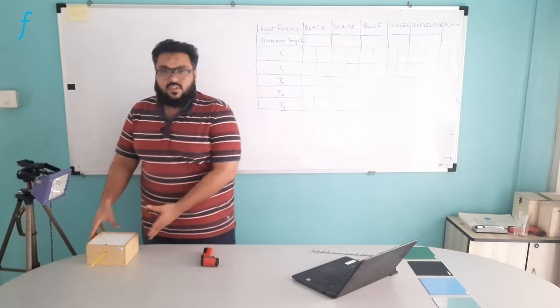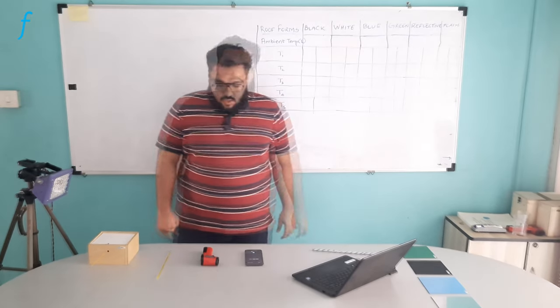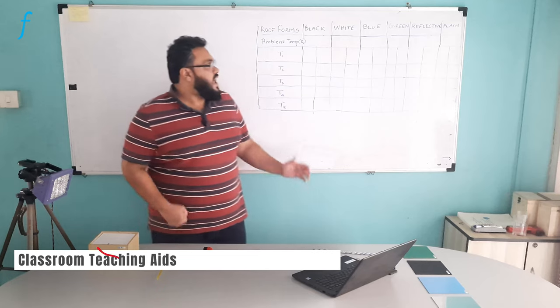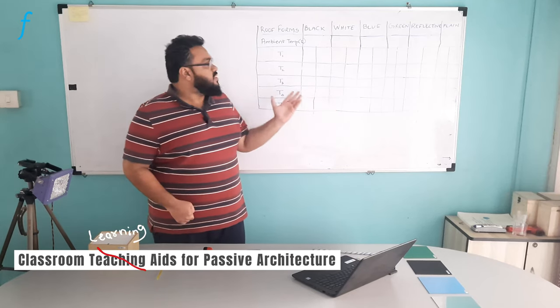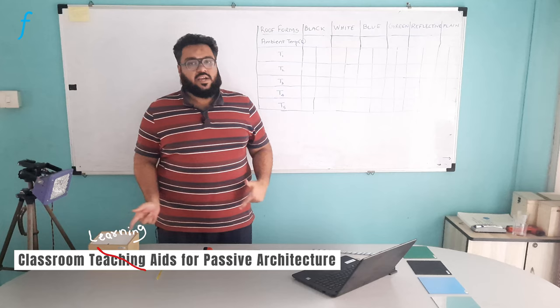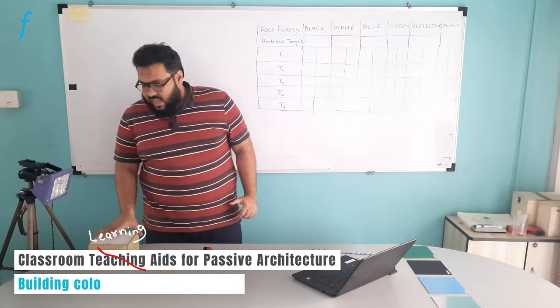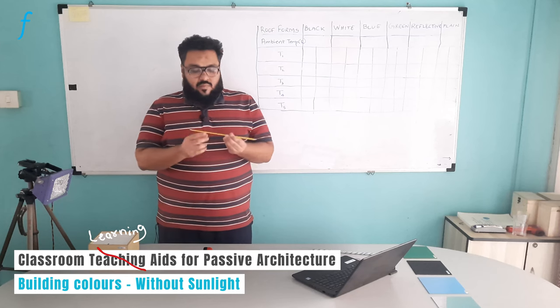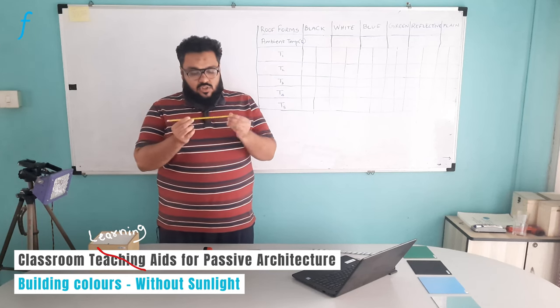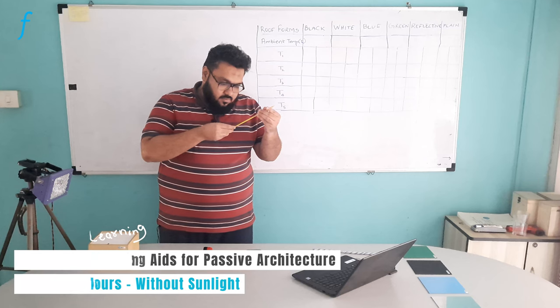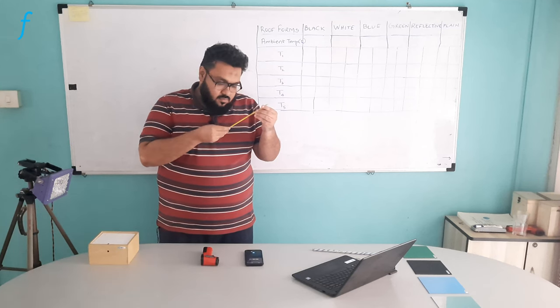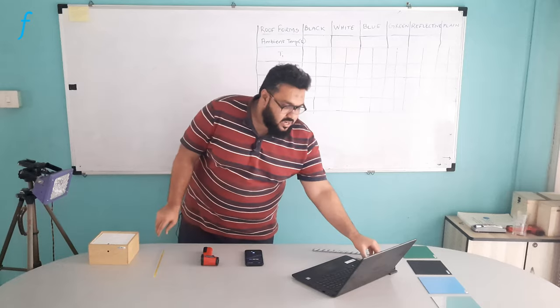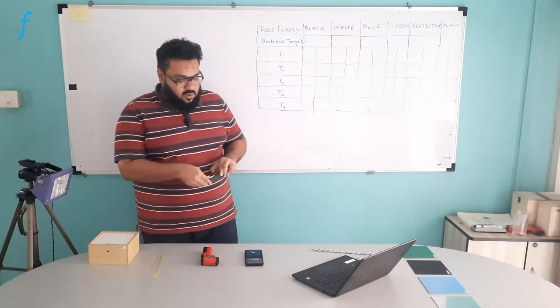This is the assembly of this experiment. To start the experiment, I have the table in front of me which I will use to note down the readings. Once I have this assembly ready, I will first note down the ambient temperature reading through this thermometer. Currently I am getting 24 degrees Celsius, which I will note down inside the table.